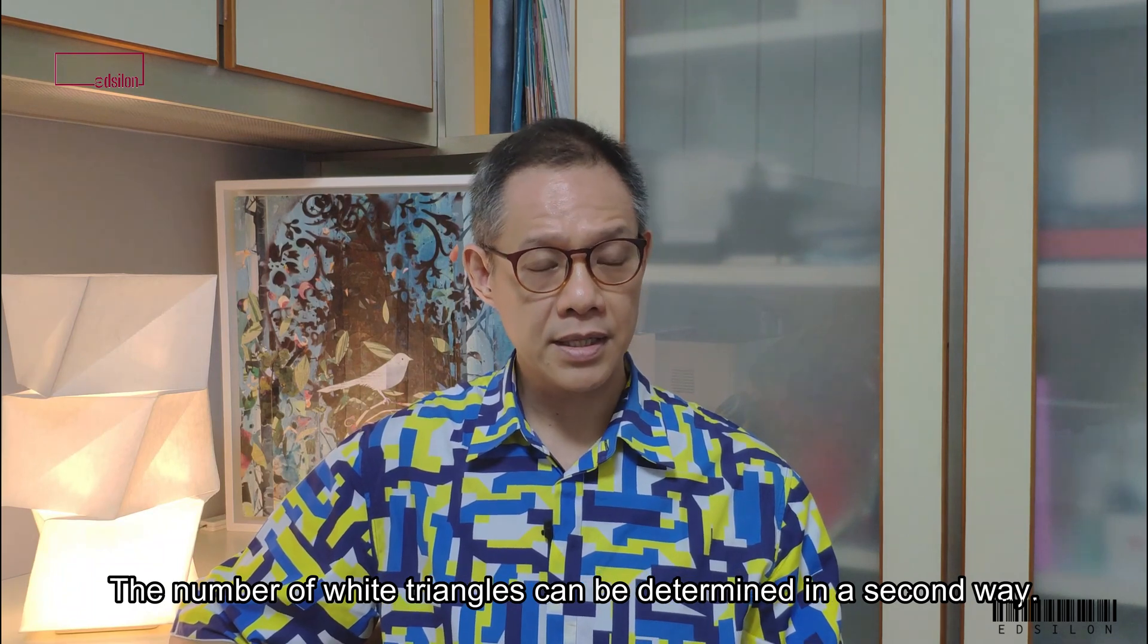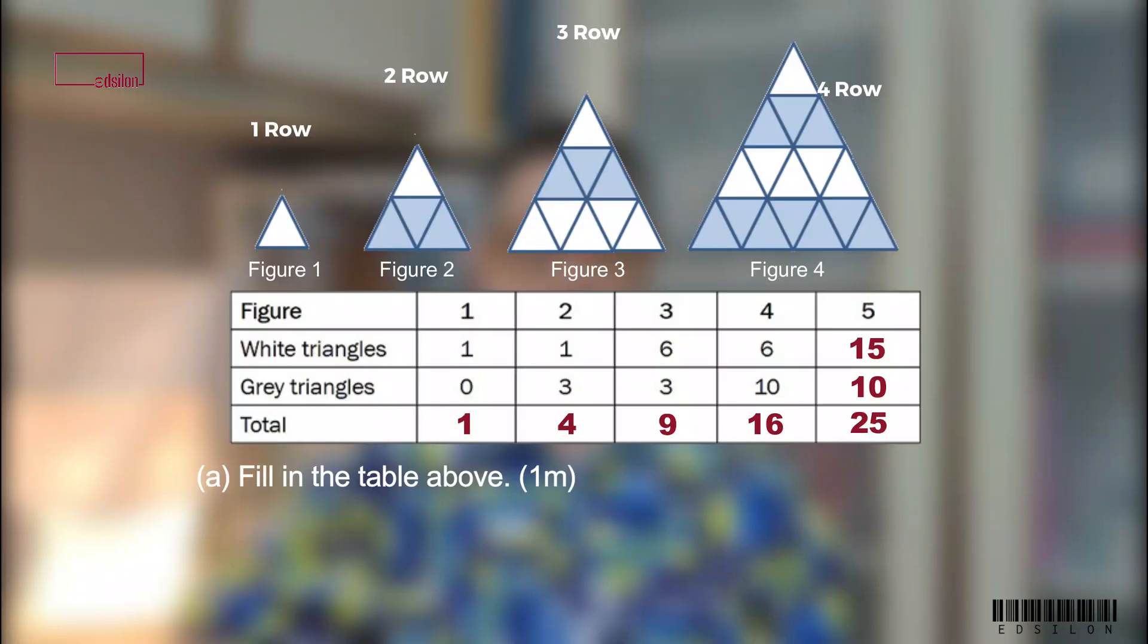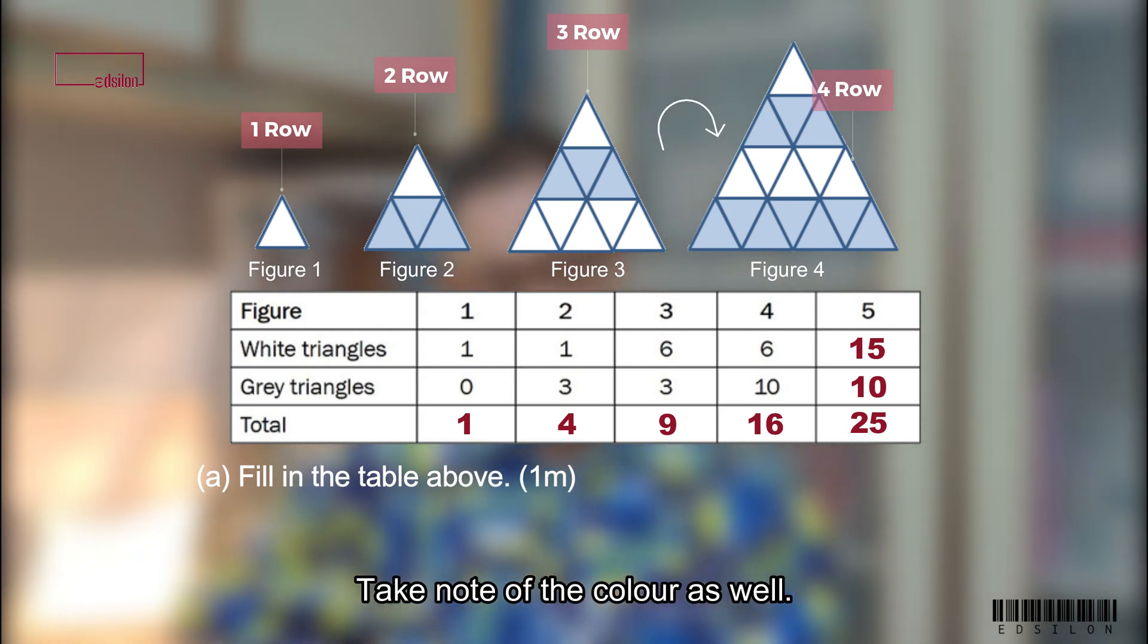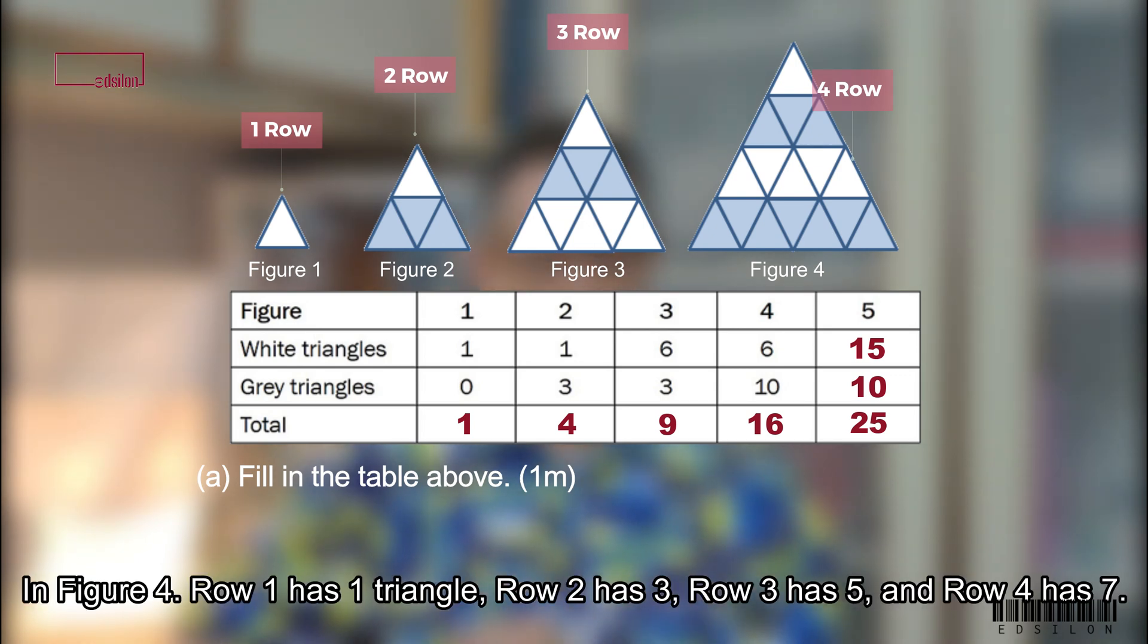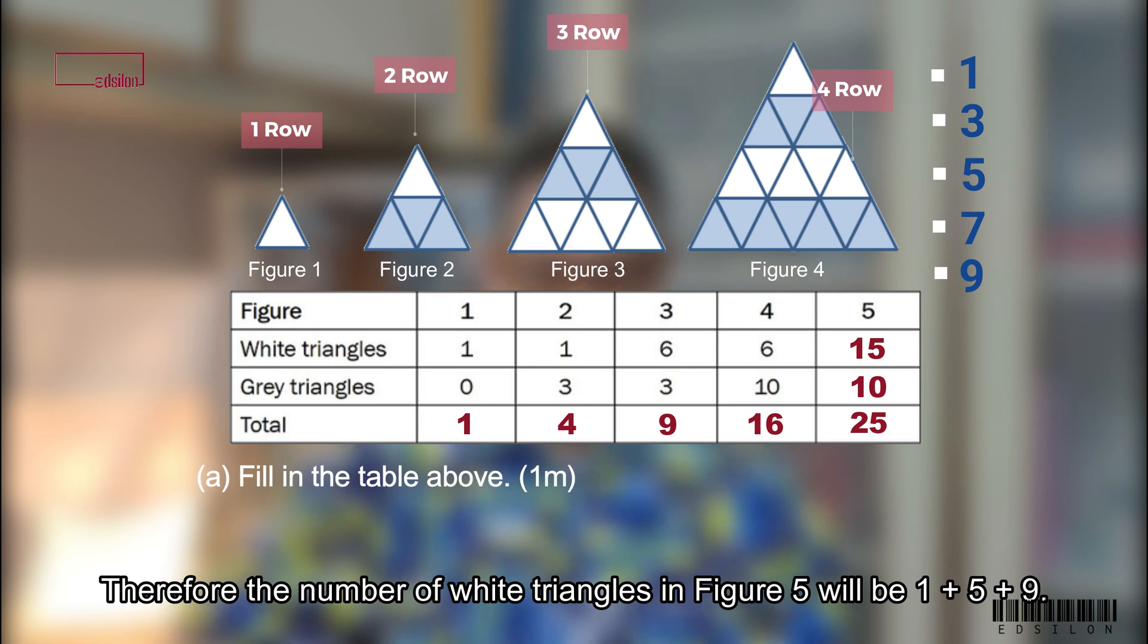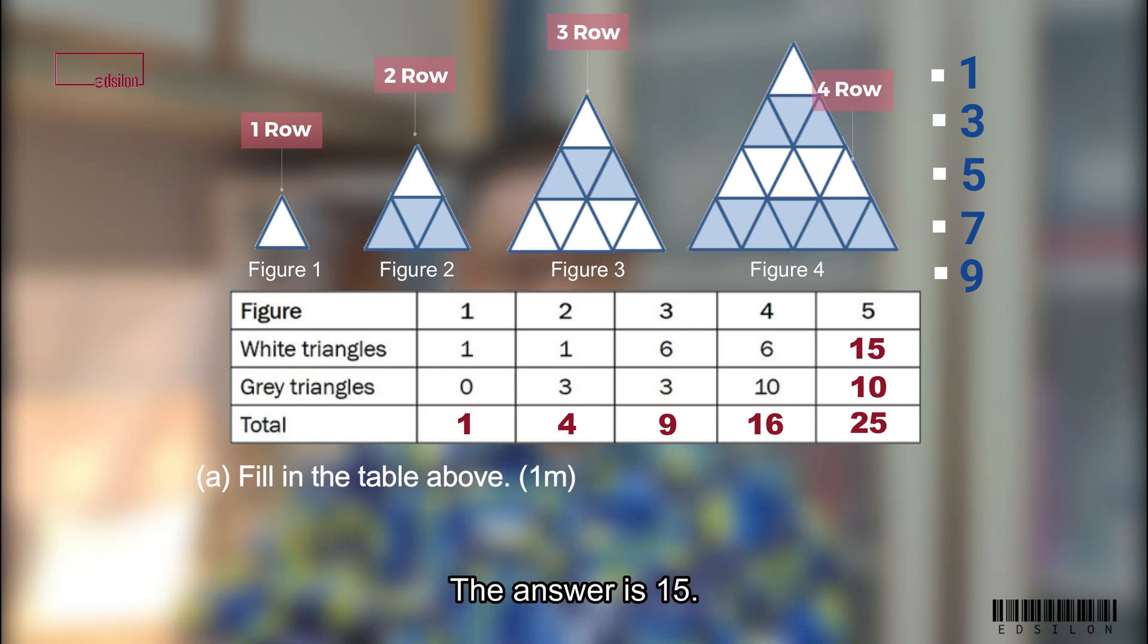The number of white triangles can be determined in a second way. As the triangles grow, add 1 extra row to the previous figure. Take note of the colour as well. In figure 4, row 1 has 1 triangle, row 2 has 3, row 3 has 5, row 4 has 7. So row 5 in figure 5 has how many? The answer is 9. Therefore, the number of white triangles in figure 5 will be 1 plus 5 plus 9. The answer is 15.